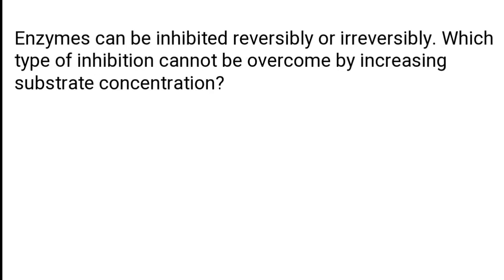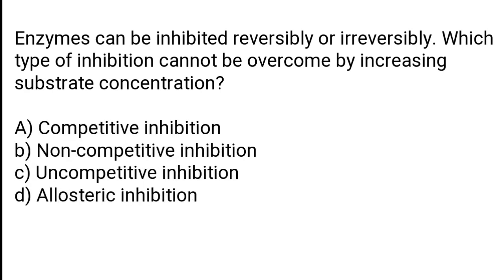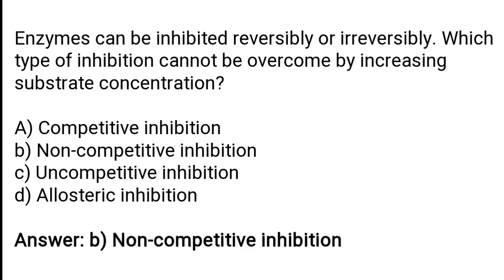Enzymes can be inhibited reversibly or irreversibly. Which type of inhibition cannot be overcome by increasing substrate concentration? A) Competitive inhibition, B) non-competitive inhibition, C) uncompetitive inhibition, D) allosteric inhibition. The correct answer is option B, non-competitive inhibition.